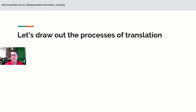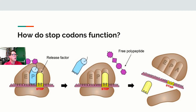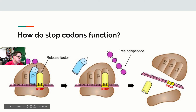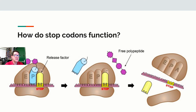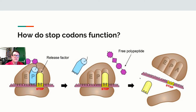Translation stops once one of the stop codons enters the A site. When we try to transfer the peptide bond at the P site, there's nothing to grab onto, so the peptide is free to float away. The tRNA — the release factor — leaves, and the ribosome falls apart, free to be used again.